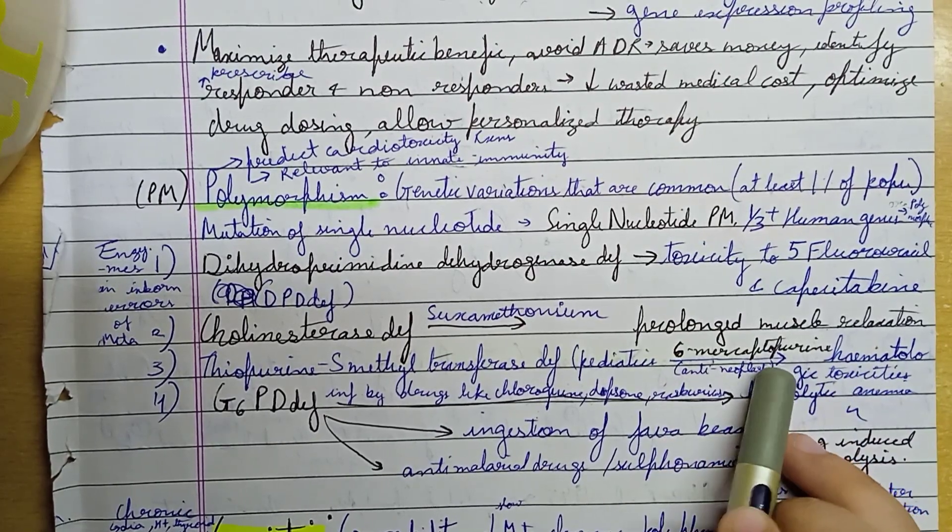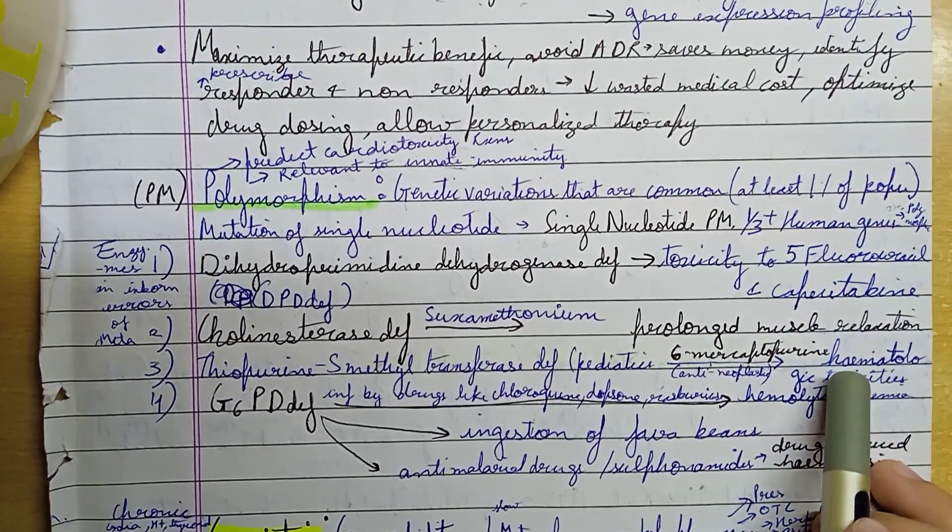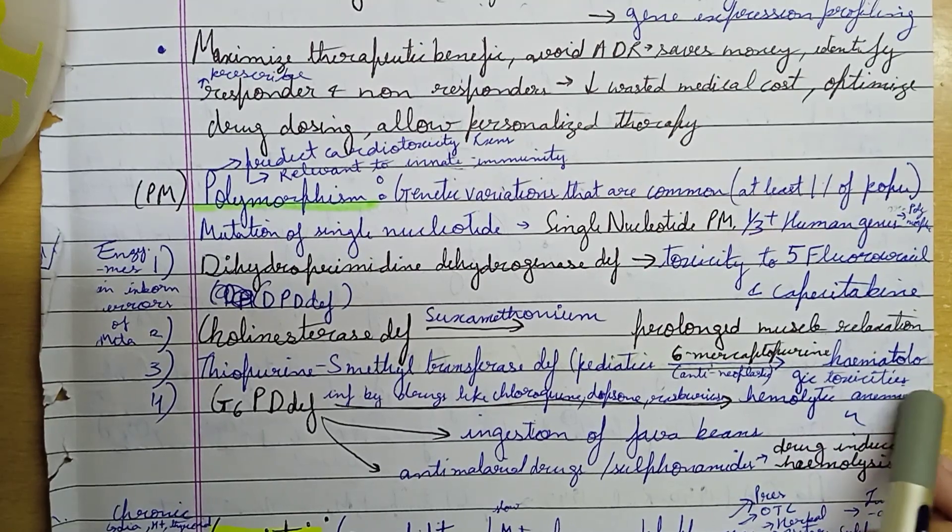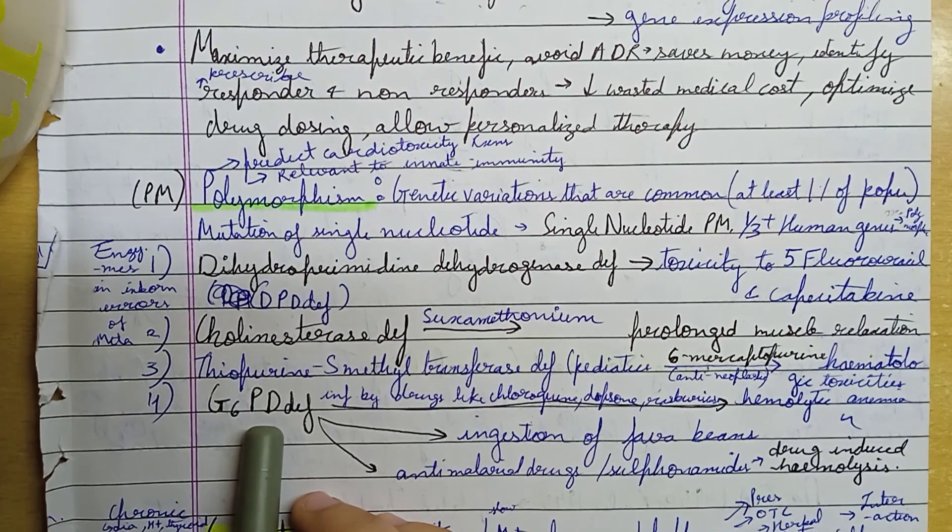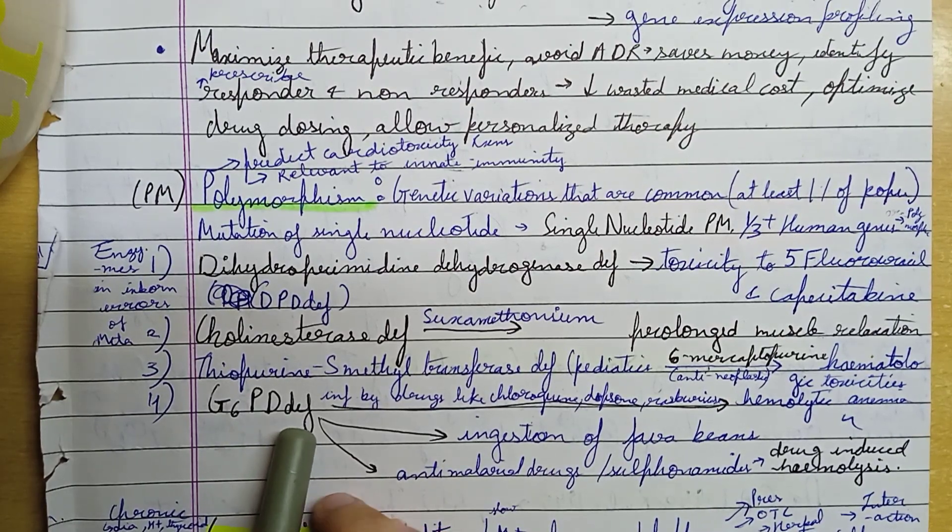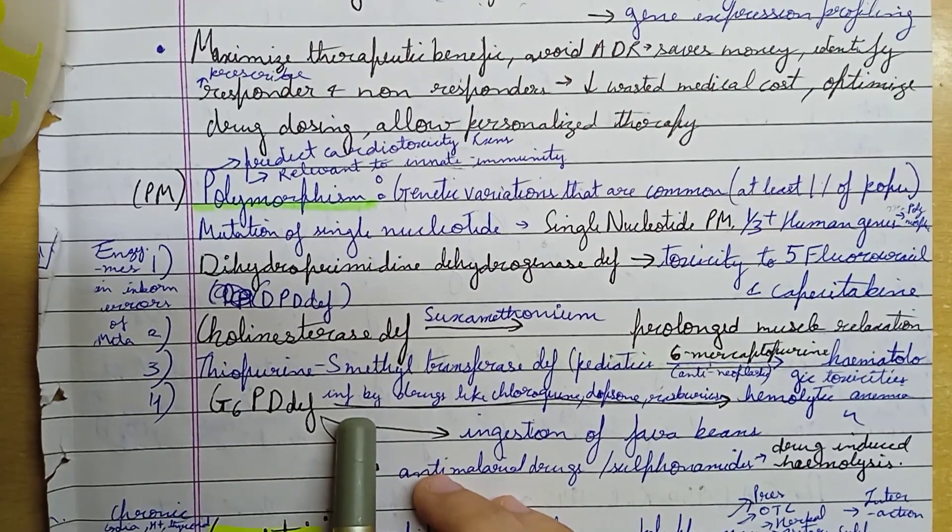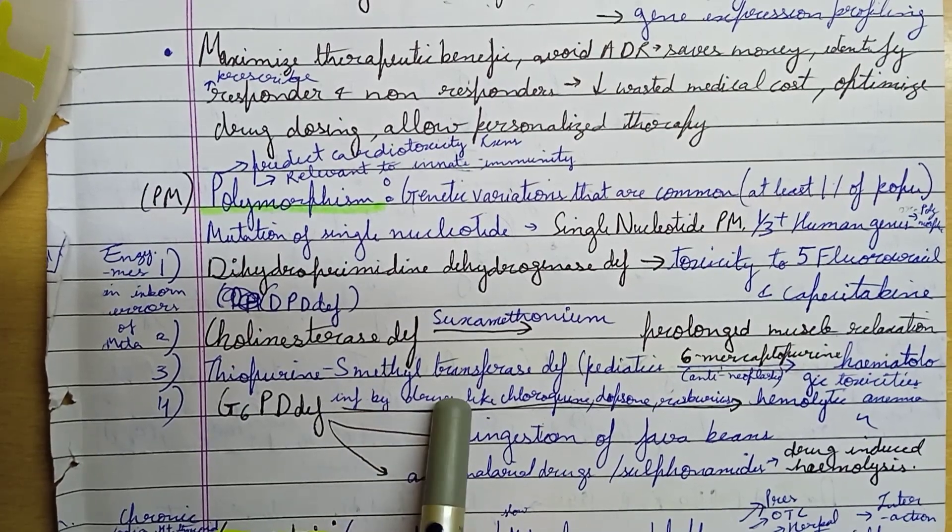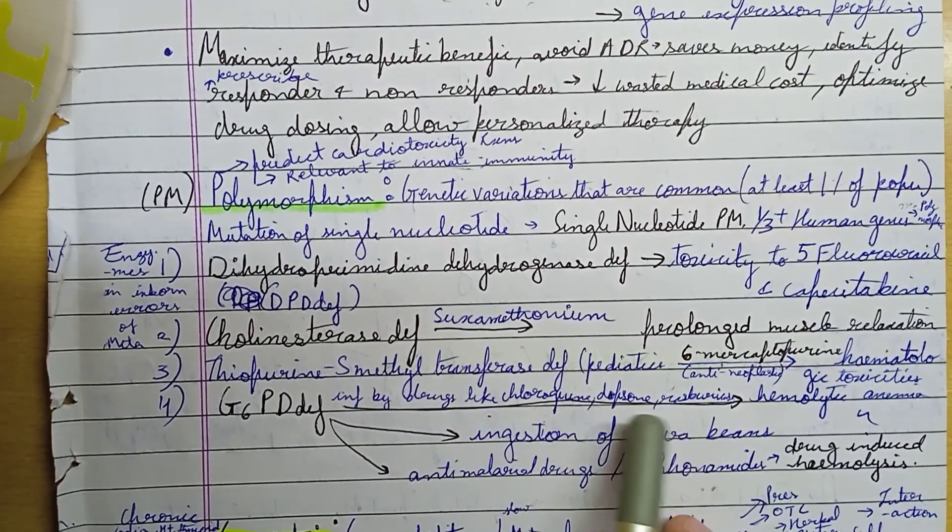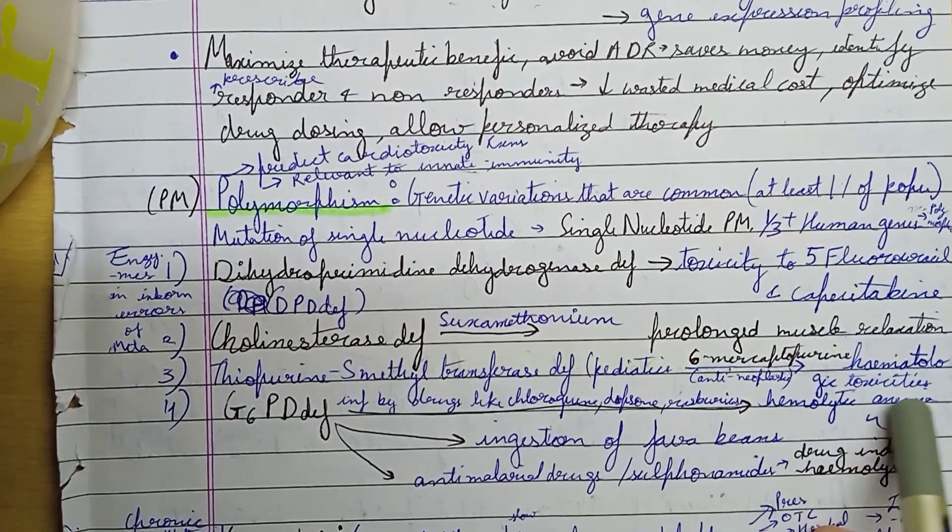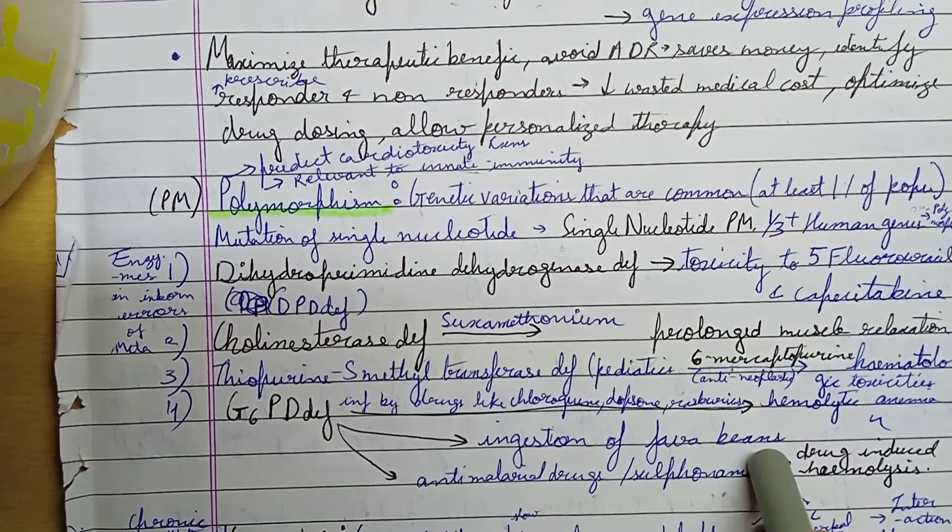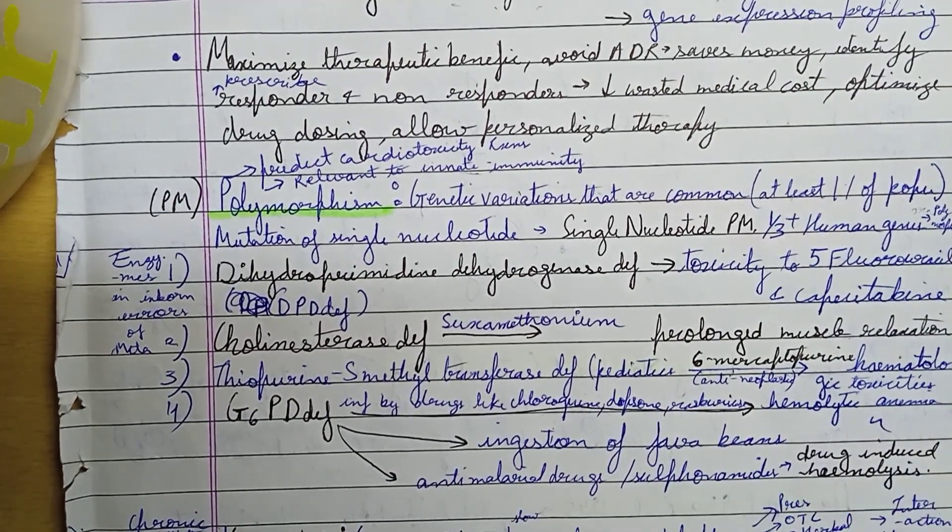Glucose-6-phosphate dehydrogenase deficiency influences drugs like chloroquine and dapsone, causing hemolytic anemia. Fava beans also cause hemolytic anemia, and anti-malarial drugs or sulfonamides cause drug-induced hemolysis.